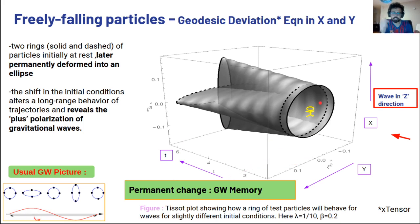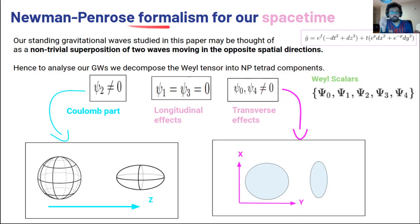The calculations were very intuitive, obviously when first done by hand using the curvature one and two forms, but then they were matched very well by the xTensor exact package, of which we had a very good tutorial yesterday. We also used this package to calculate the null tetrad, the Newman-Penrose formalism, the Weyl scalars for our spacetime. So we did the Newman-Penrose formalism for our spacetime, and our standing gravitational waves can be thought of as a non-trivial superposition of two waves moving in the opposite spatial directions.